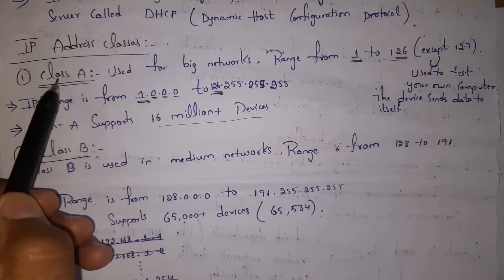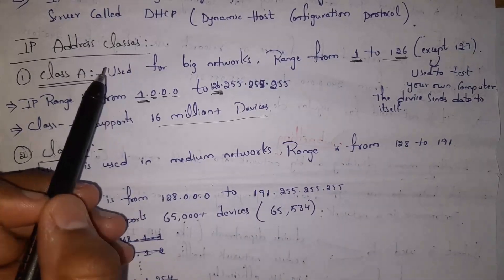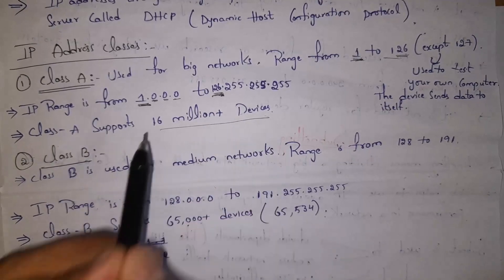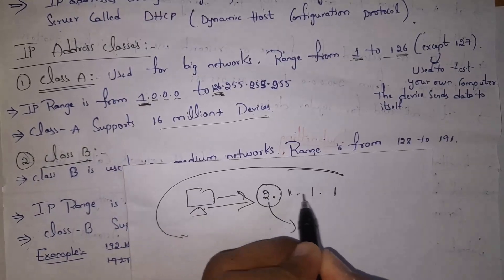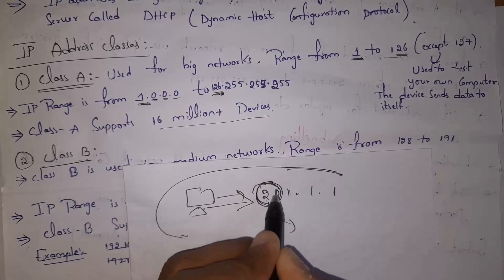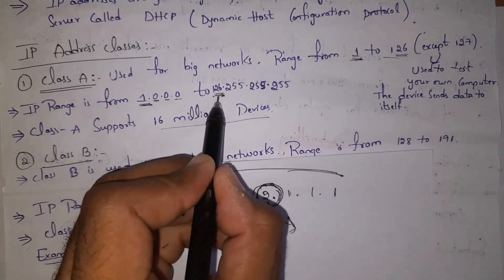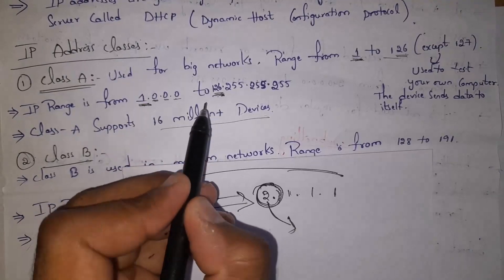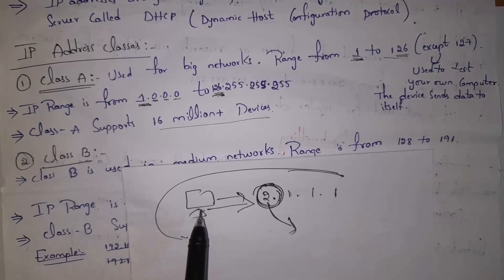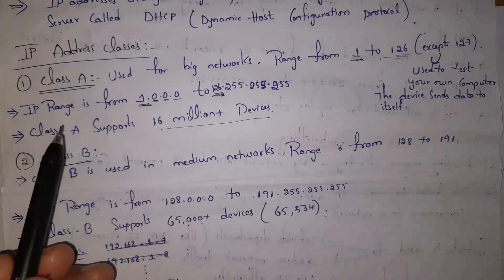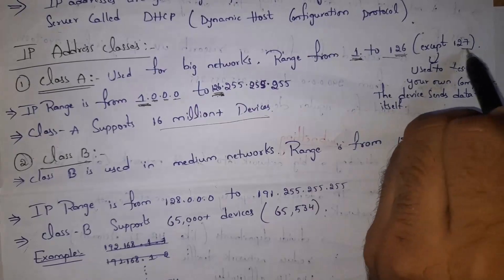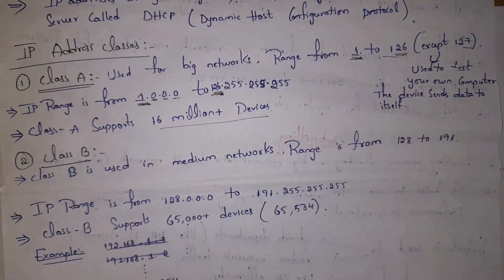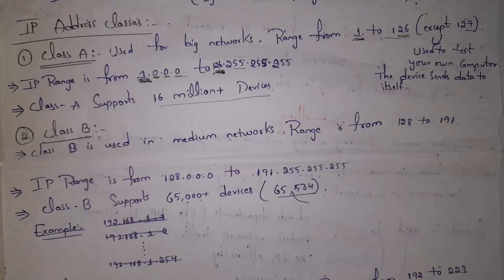IPv4 address is divided into five classes. The first one is Class A. Class A IP address is used in big networks — a big network that can support 16 million devices. To identify a Class A address, look at the starting number: if it is between 1 and 126, it is a Class A IP address. Class A ranges from 1 to 127, but we use only 1 to 126 — we don't use 127 because it is reserved for loopback, when a device wants to send data to itself.